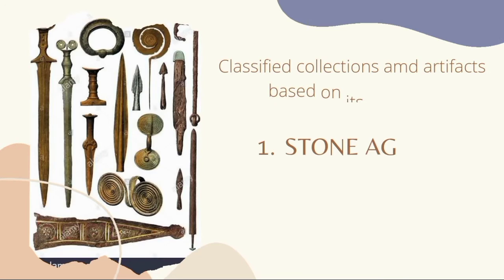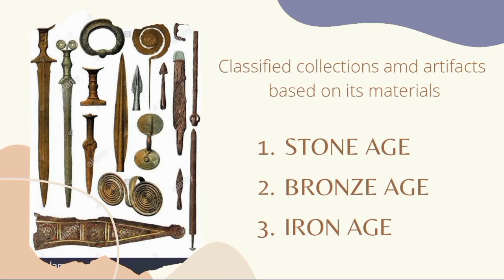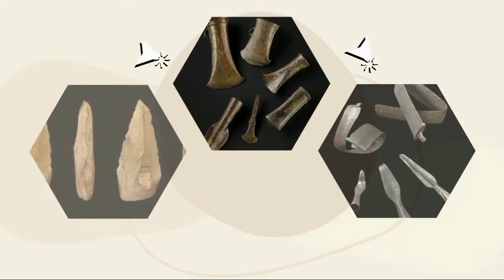Upon fulfilling his job as a curator, he was able to differentiate and categorize each collection or artifact based on its materials and by its physical appearance. So he divided them into three: the Stone Age, Bronze Age, and the Iron Age.